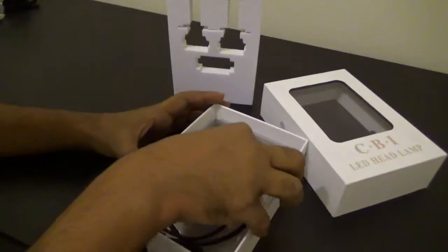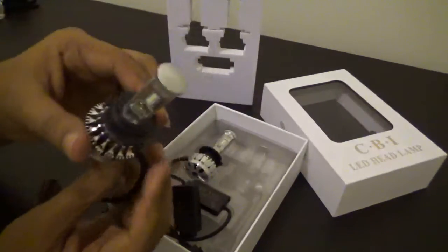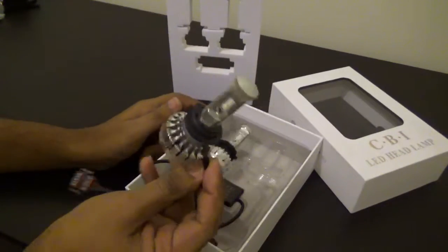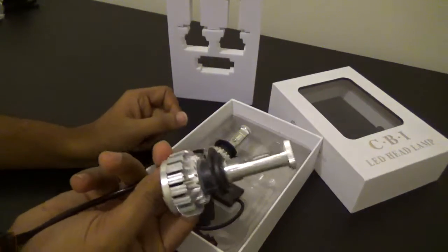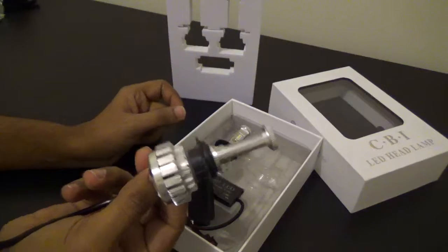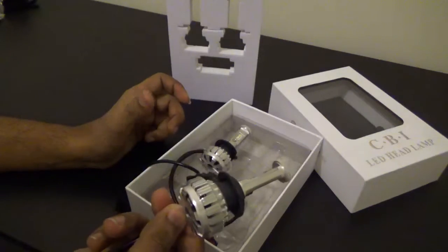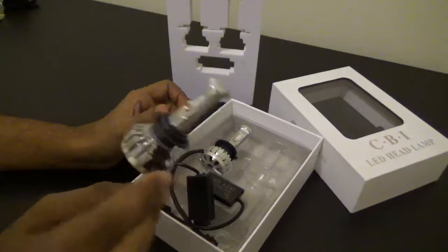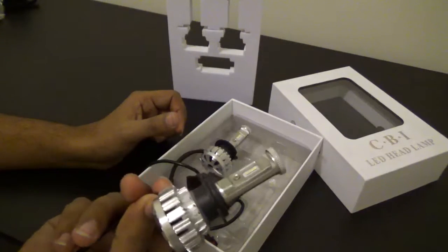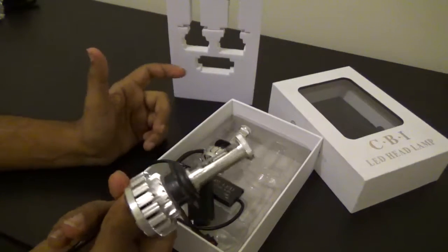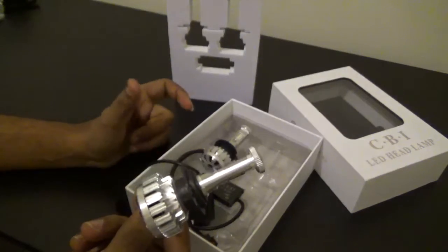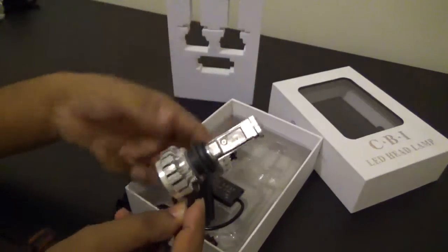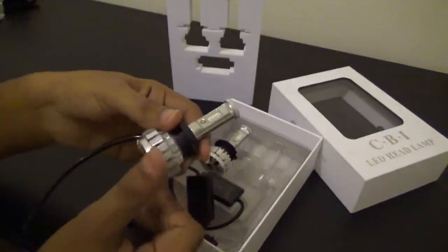You can see we have this H7 bulb. This one replaces the old halogen type of bulbs that we use in our car. It's just a plug-and-play system. You don't have to do any special installation. You take the old one out, slide this one in, the ring goes over it, and you lock it.